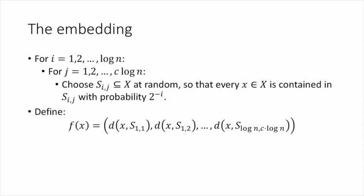Here's the embedding. I'm going to go through it first in words, and then I'll draw a picture. The embedding is randomized, which is why we're talking about it in randomized algorithms class. And the way it works is as follows. First, for i that goes from 1 to log n, and then for j that goes from 1 to c log n, I'm going to choose a set S_{i,j}, a subset of my space X, at random, so that for every little x in big X, that little x is contained in the set S_{i,j}